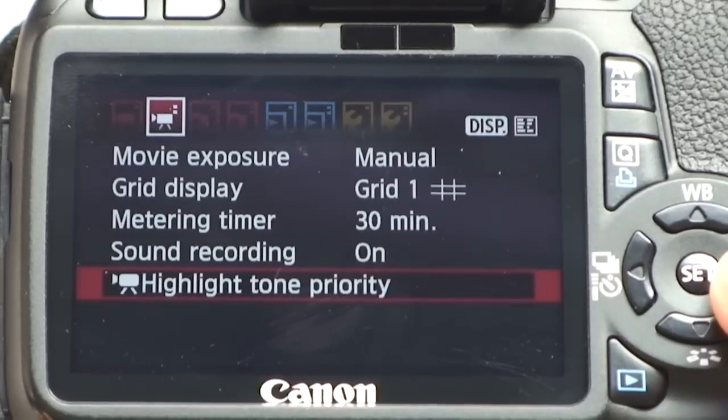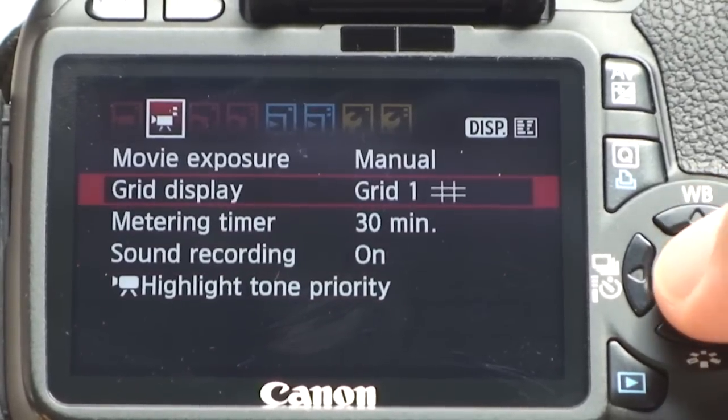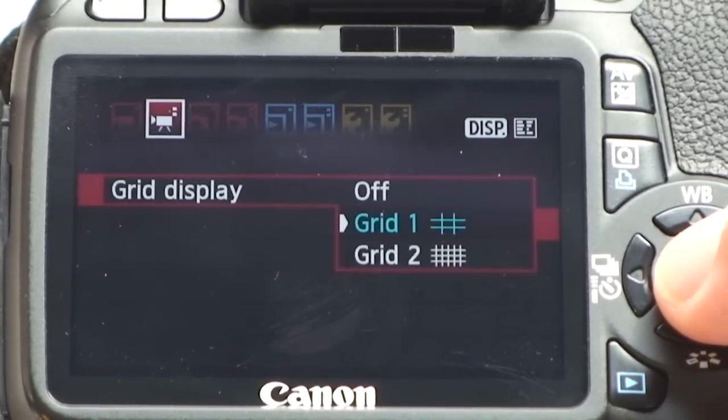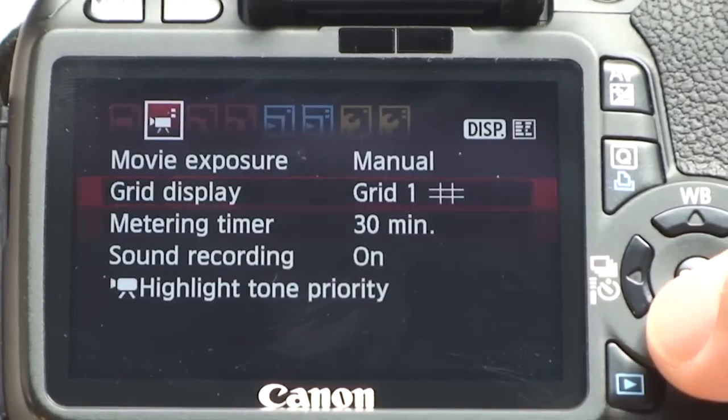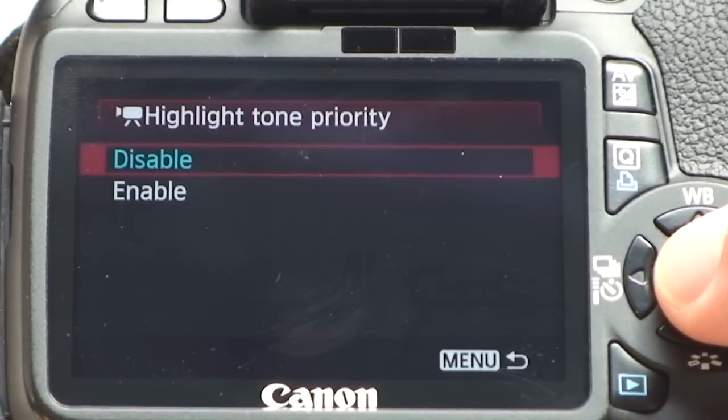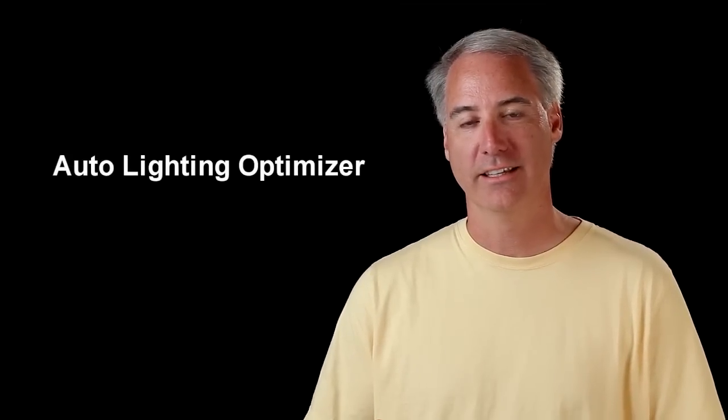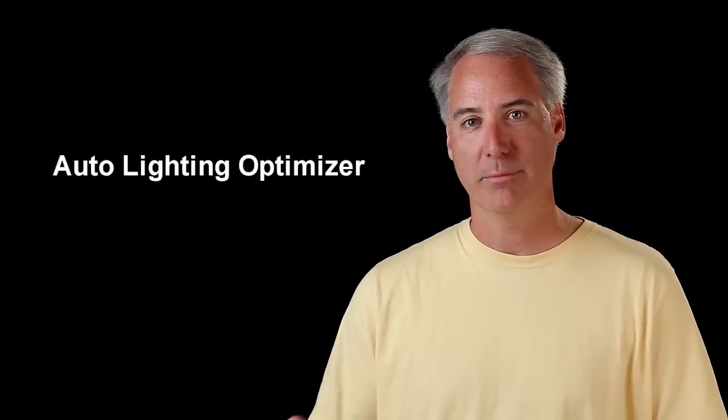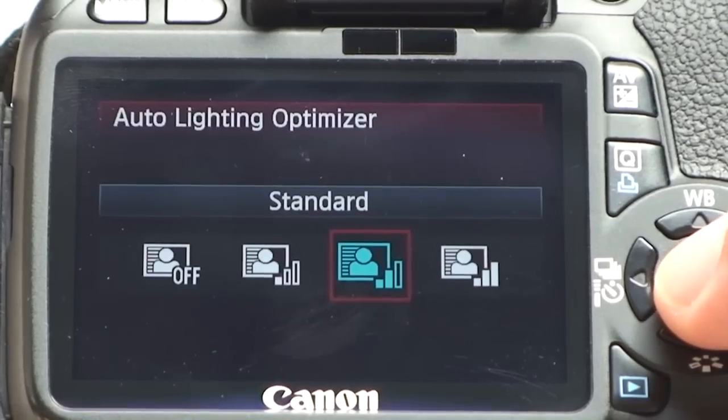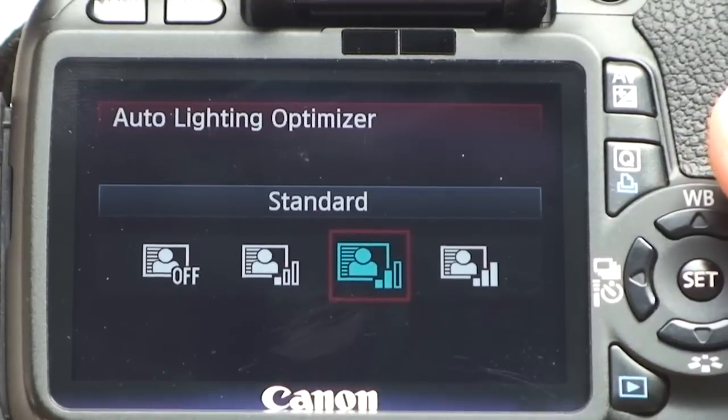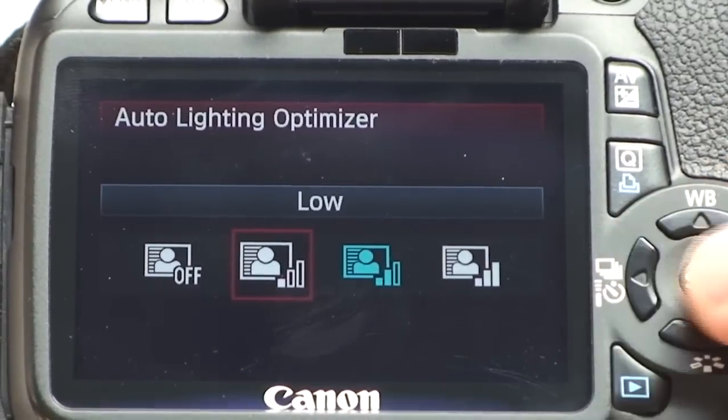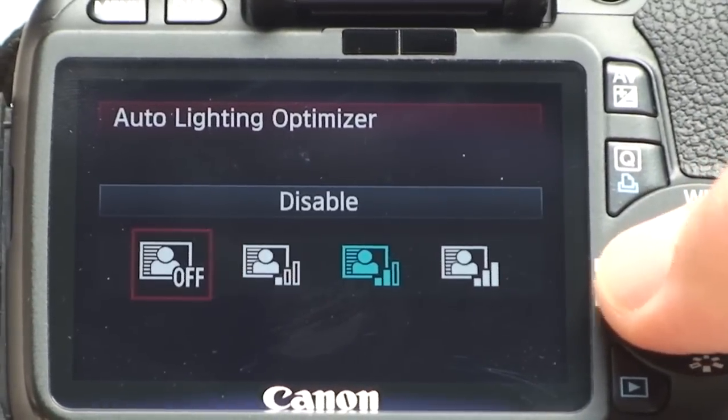And the grid display, I usually like to have it on grid one since I can fool around with the rule of thirds. And the last thing that I never check is the highlight tone priority. I disable that. And the other thing that I never check usually is the auto lighting optimizer. I usually leave it on standard. If I need to fill in a little bit more light on a person's face, then I'll go with strong. But I typically don't use the low or disabled mode because it seems to work pretty well.